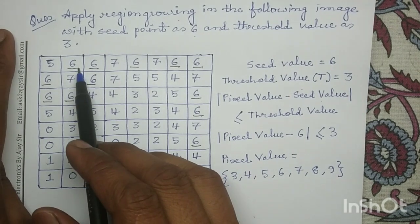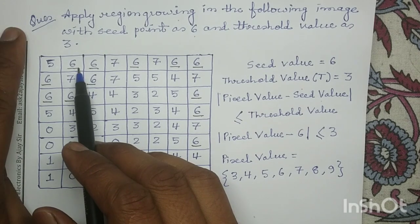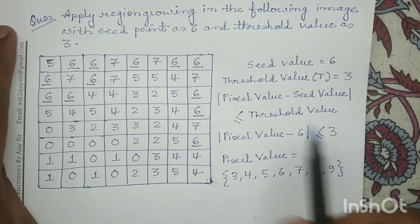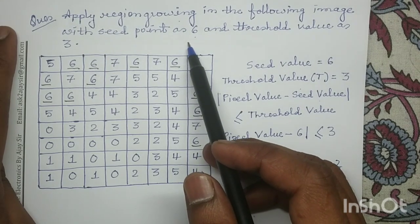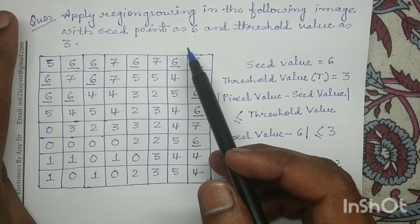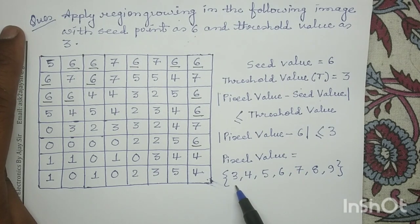For each seed point we have to check its neighborhood pixels. If the neighborhood pixels have a pixel value in the range 3 to 9, we will grow the region; else we do not. Since 4-neighborhood or 8-neighborhood is not clearly mentioned in this question, by default we will apply 8-neighborhoods.